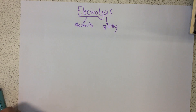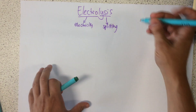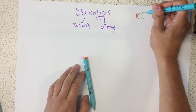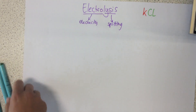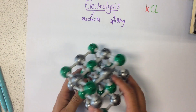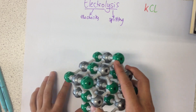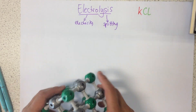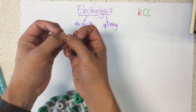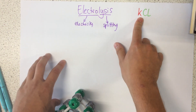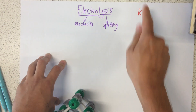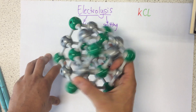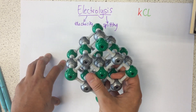The specific example we're going to look at is splitting potassium chloride. Potassium chloride is an ionic compound held together by strong ionic bonds. We might want to use electrolysis to get potassium metal all by itself and chlorine gas all by itself — but at the moment, as we can see, they are not separated.